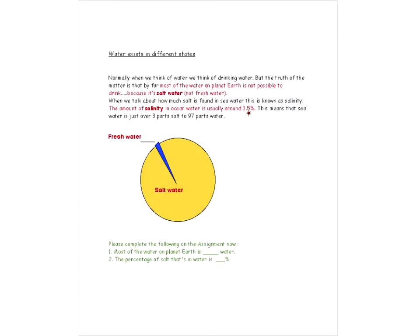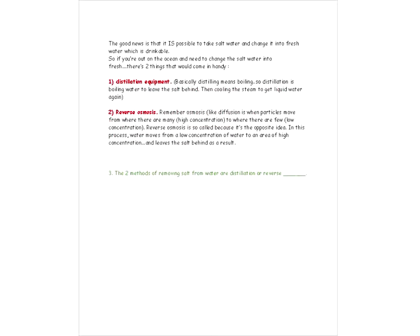Most of the water on planet Earth is, as we mentioned, salt water. And the percentage of salt that's in ocean water is 3.5%.